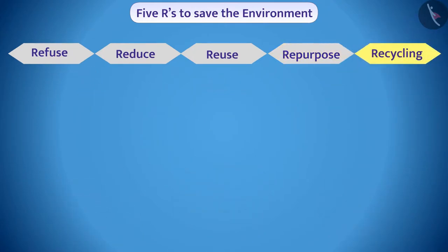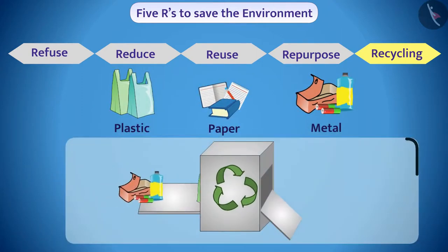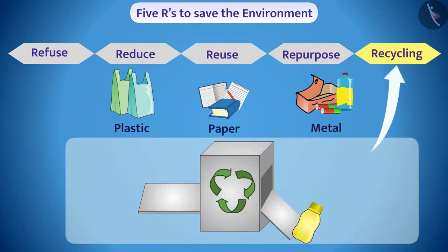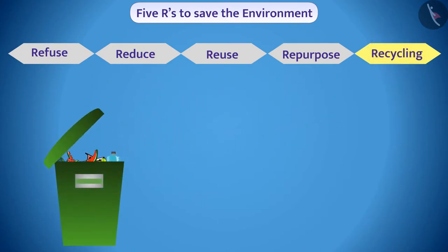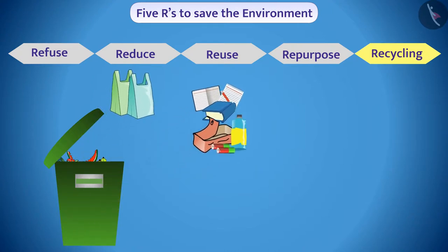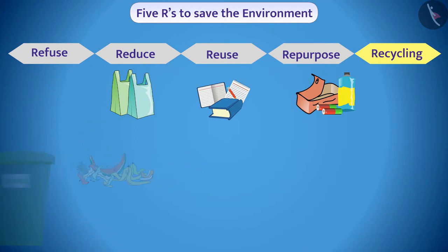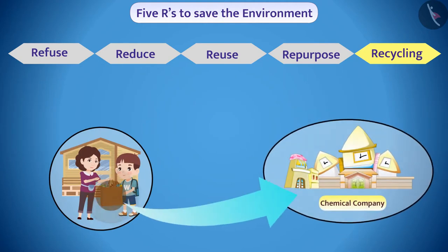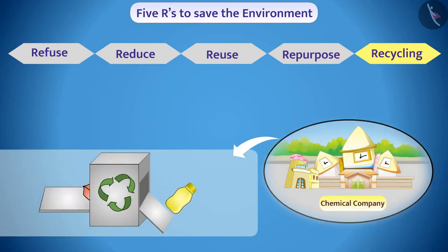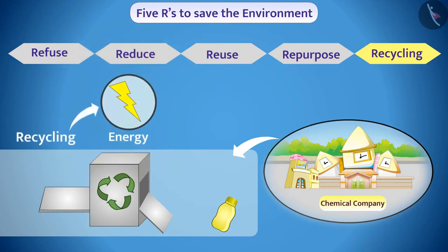Recycling. Items like plastic, paper, and metal can be used to make new things again — this is what we call recycling. Many items that can be recycled are sometimes thrown away as garbage. We should separate such items from the waste produced at home. Various people in the village and city collect such items and give them to chemical companies where they are recycled. Note that energy is required for the process of recycling, so whenever possible, we should focus on reuse.